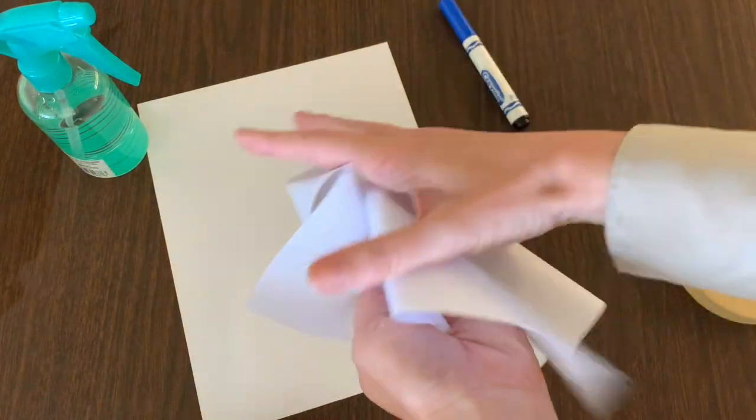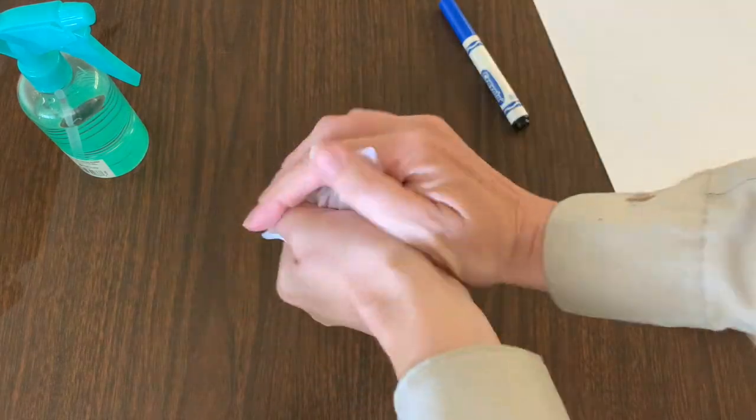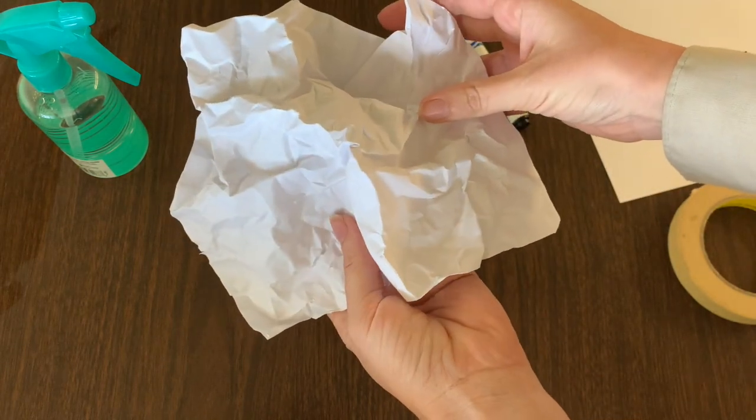Take one piece of white paper and crumple it up into a ball trying to get it full of wrinkles. You can then smooth it back out to make sure that it has plenty of texture.